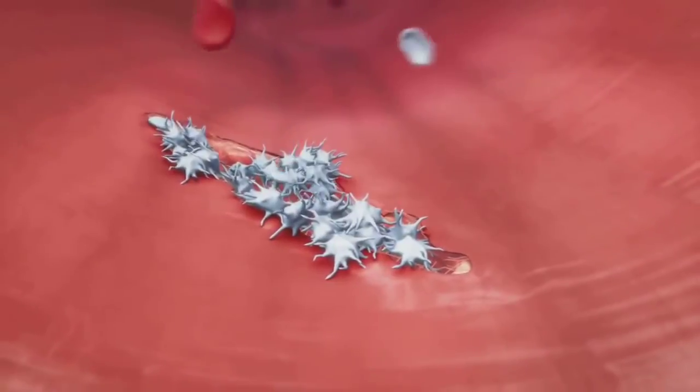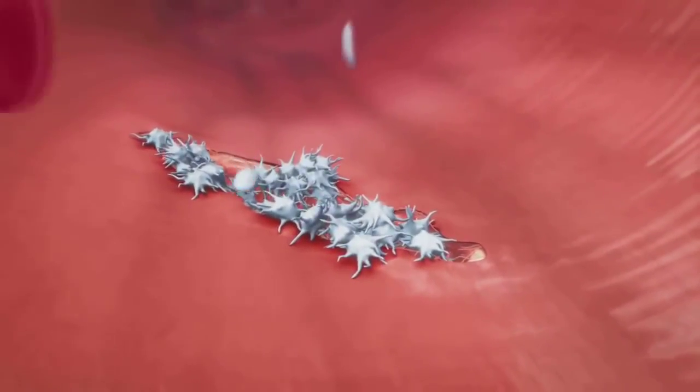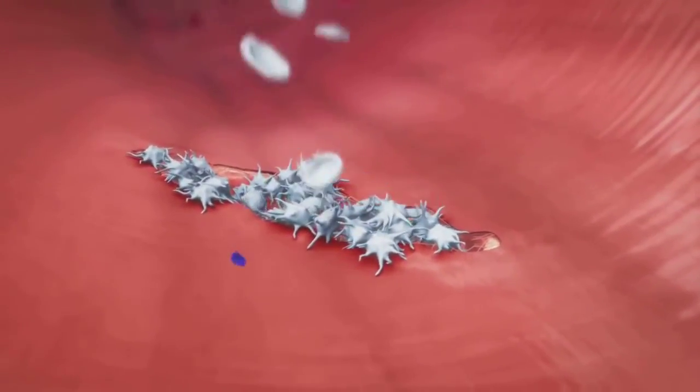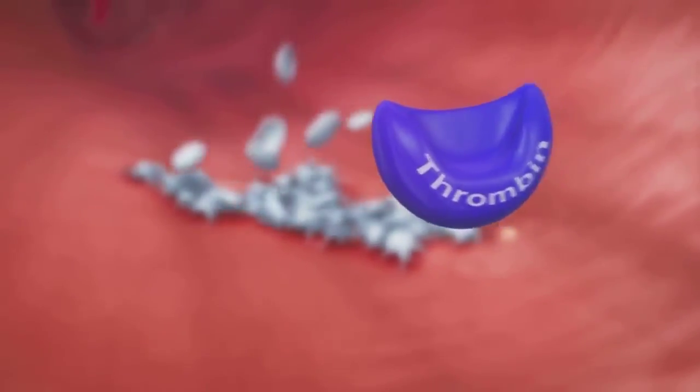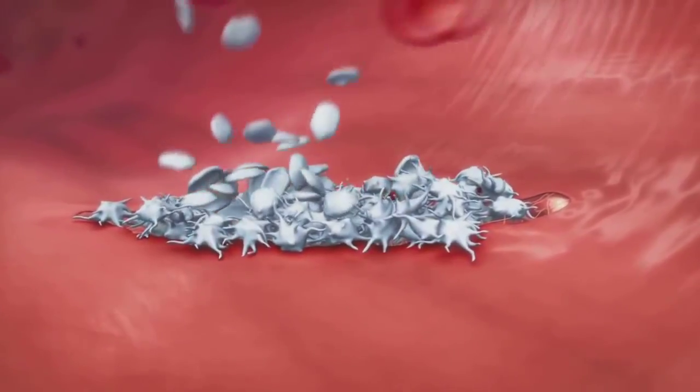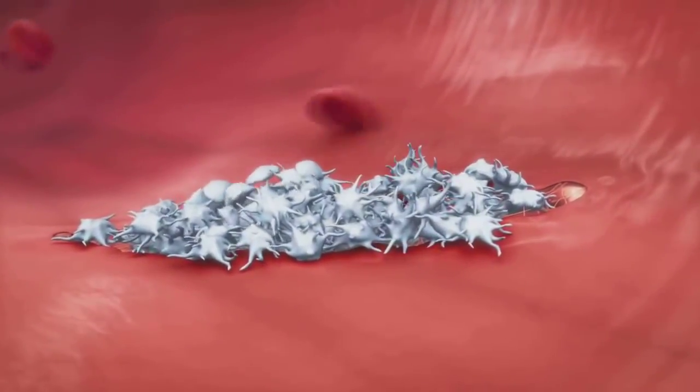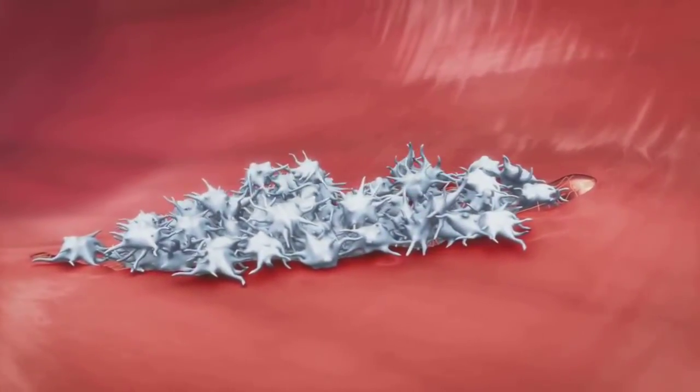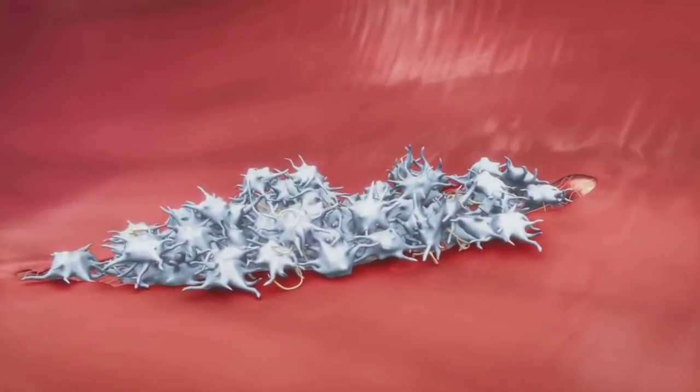Activated platelets also trigger the coagulation cascade and thus the formation of thrombin. Thrombin, in turn, stimulates platelet activation even further, a continuous feedback loop. Additionally, thrombin induces the formation of fibrin for the mesh stabilizing the clot.